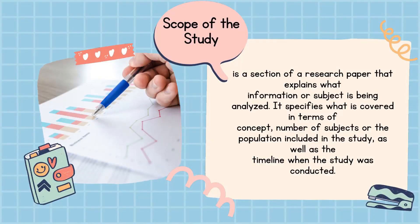What about the scope of the study? It is a section of a research paper that explains what information or subject is being analyzed. It specifies what is covered in terms of concept, number of subjects, or the population included in the study, as well as the timeline when the study was conducted.